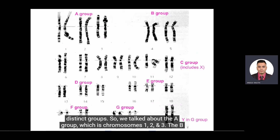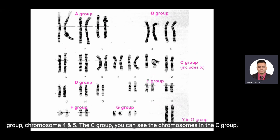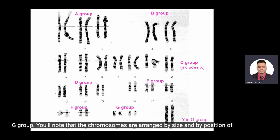When you arrange the chromosomes you can organize them into distinct groups. We talk about the A group, which is chromosomes 1, 2, and 3; the B group, chromosomes 4 and 5; the C group, which also includes the X chromosome; the D group; the E group; the F group; and the G group. The chromosomes are arranged by size and by position of the centromere.